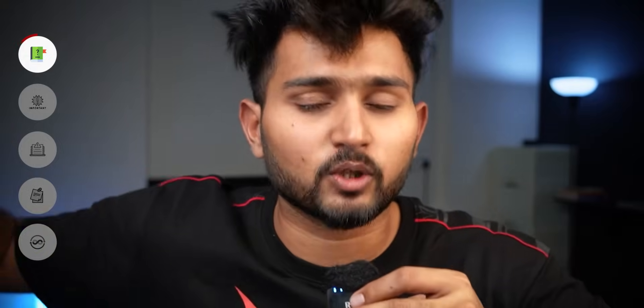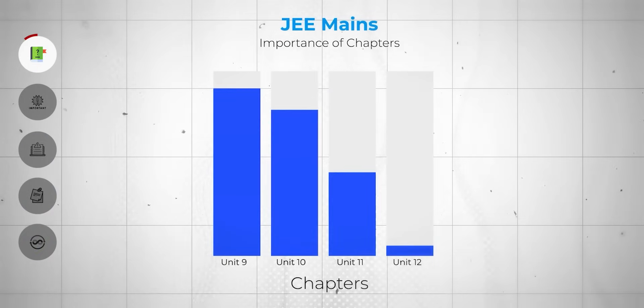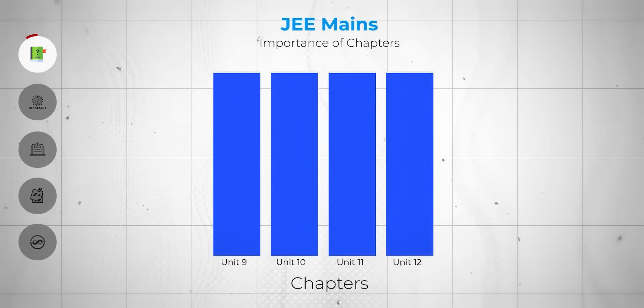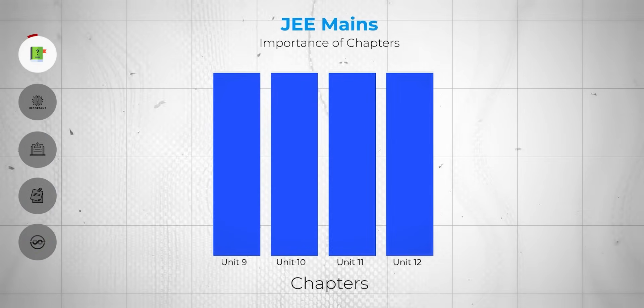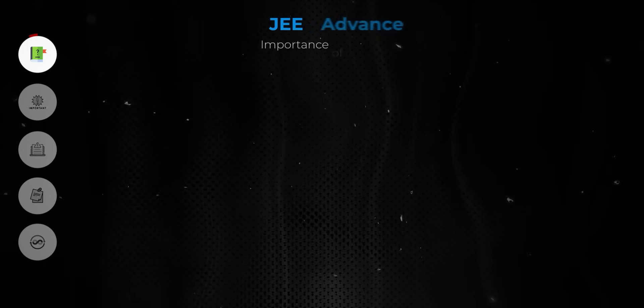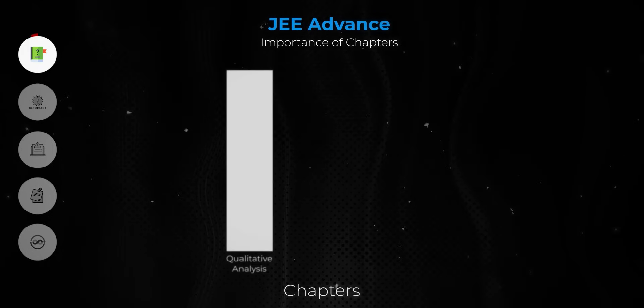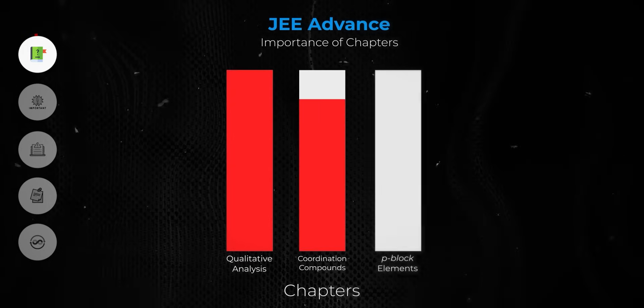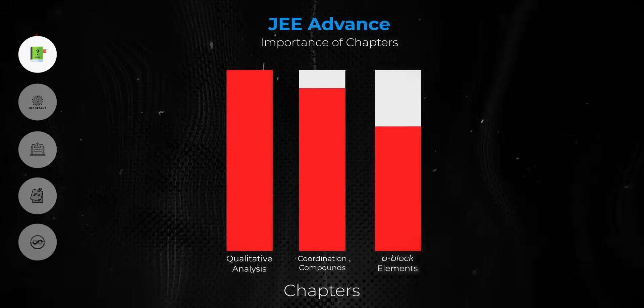Once you have NCERT and other reference books in place, make sure you give equal importance to each and every chapter for JEE Mains at least. For JEE Advanced, give more importance to qualitative analysis, coordination compounds, and P-block elements. Now you know the syllabus well and the books to refer to — you've upgraded yourself to the next level.